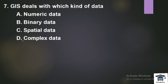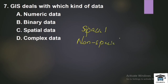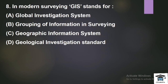Next question: GIS deals with which kind of data? GIS uses two types of data: spatial data and non-spatial data. Among the options, spatial data is listed, so we can use spatial data as the answer.